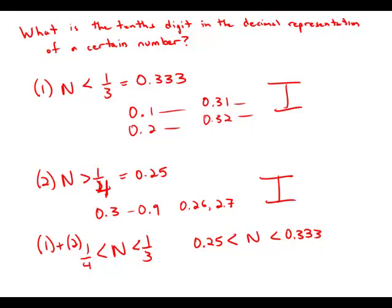Well, N could be something like 0.26, or it could be something like 0.31. Both of those are examples of numbers that are bigger than a quarter and less than a third. And notice that they don't have the same tenths digits. The tenths digit could be 0.2 or 0.3. So, even with the combined statements, we do not have sufficient information to uniquely determine what the tenths digit would be.